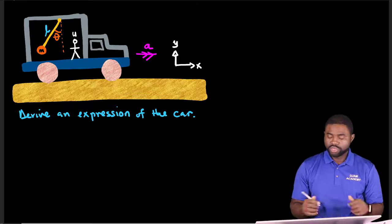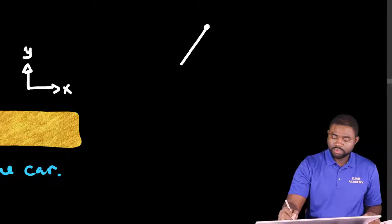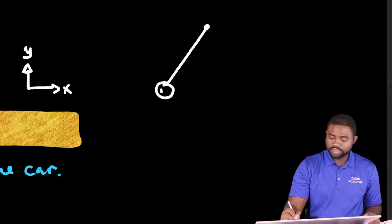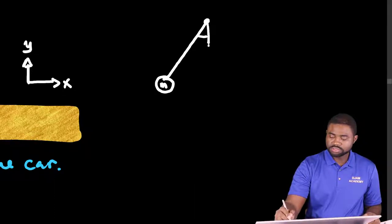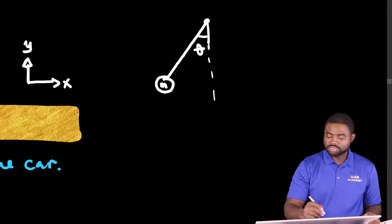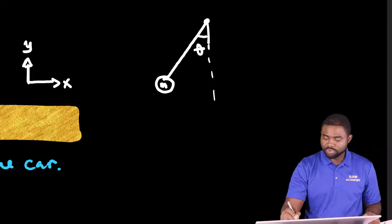So what do we have? We have a rope, a pendulum of mass m hanging downwards. It makes an angle theta and the whole system is moving forward. So let's draw the free body diagram on the mass.